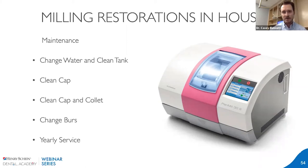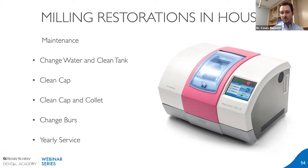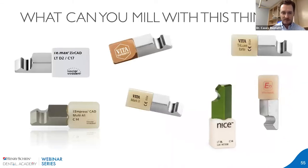The mill also tracks tool breakage and tool wear — it lets you know how many restorations that specific burr has milled. Finally, you'll need some type of yearly service — getting a Henry Schein technician to come out, open everything up, check that the inside of the milling unit is clean, make sure pressure and fluid levels are right, and calibrate it if needed — but that's just once a year. Overall, it's not that much more maintenance. The main thing we do every day is change that water if I'm doing more than three units, because keeping everything lubricated is super important.